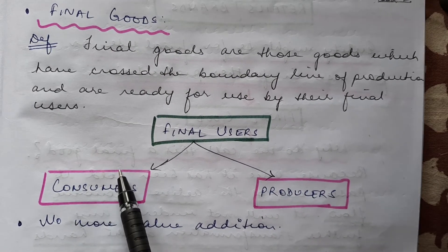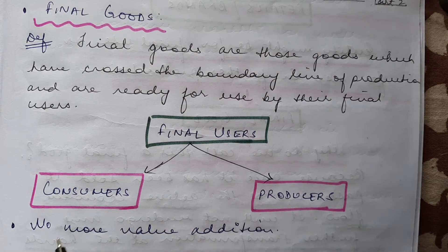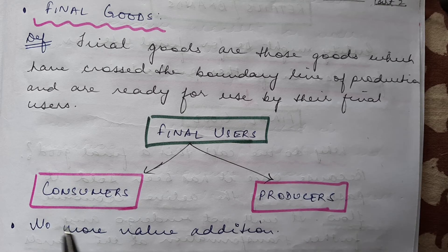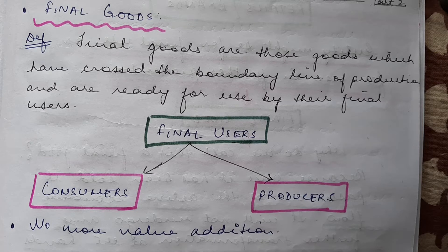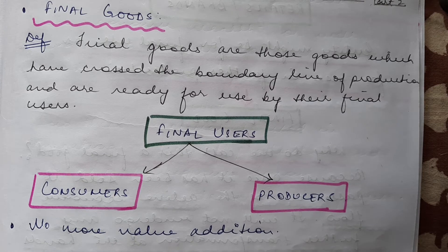Final users can be of two types: one is consumers and one is producers. Now, for intermediate goods, value was being added as the good crossed one step of the manufacturing chain and moved to the next. But for final goods, no more value is being added — the good has already crossed the boundary of production and is now ready for consumption.